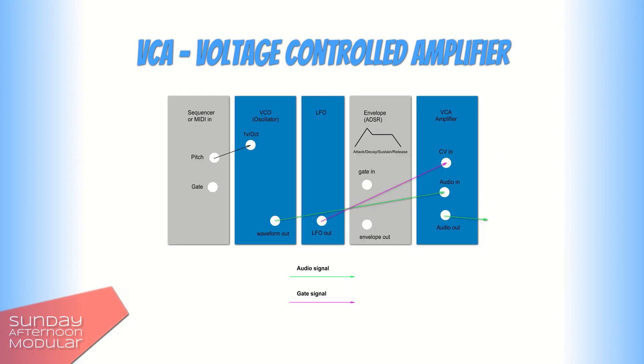You can use other modules to control the VCA as well, for example an LFO. If you speed it up, you will get a warbling tremolo effect.